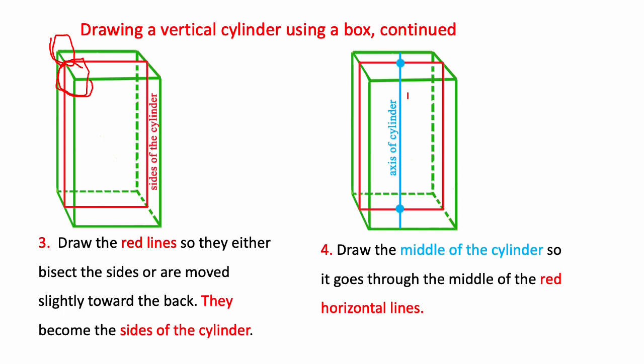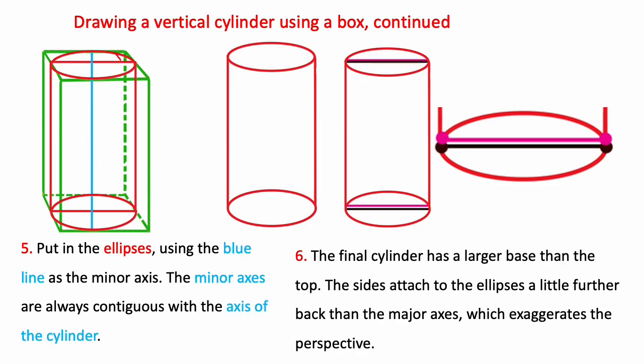Then draw the axis of the cylinder by connecting the middle points of the two horizontal lines so that this side of the red line equals this side. And finally put in the ellipses using this blue line as the minor axis and again notice how these minor axes line up with the axis of the cylinder.